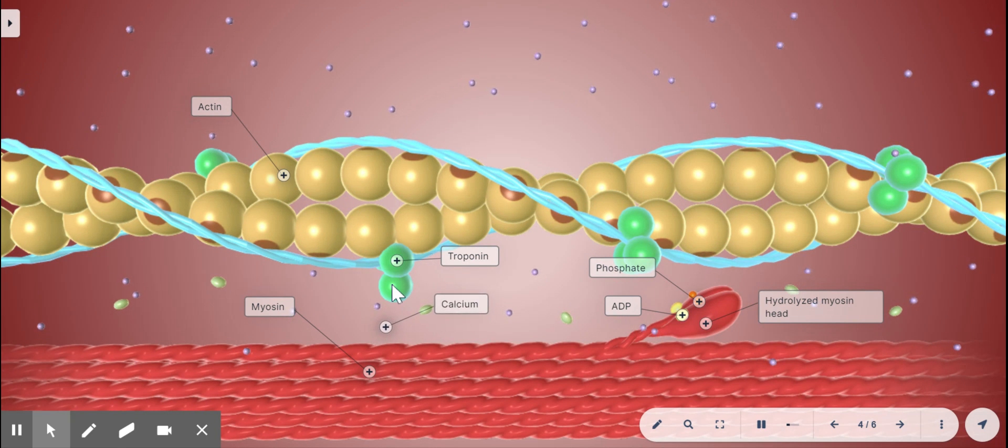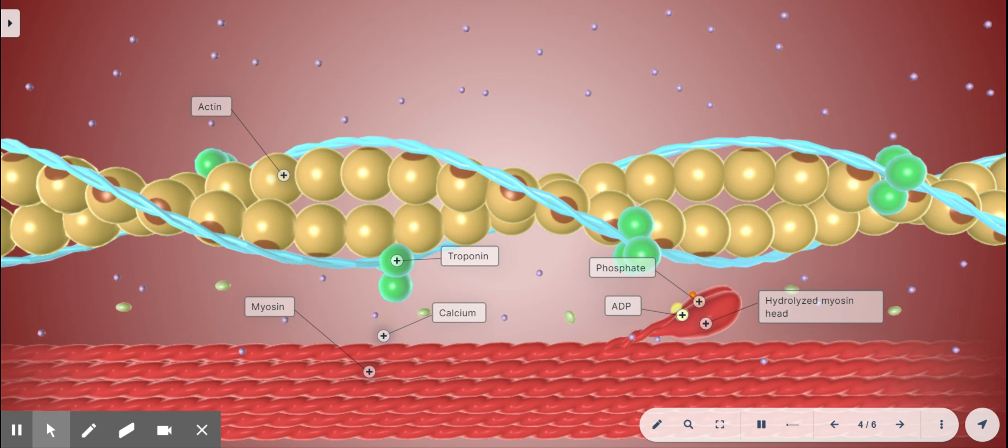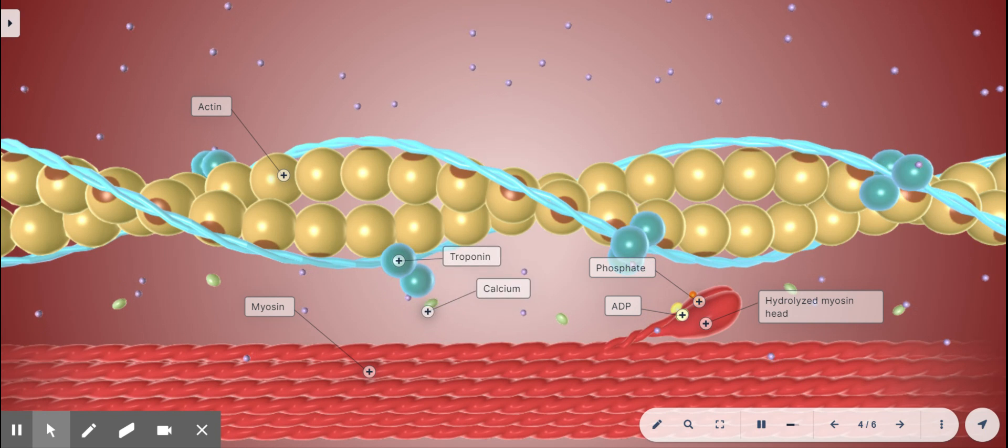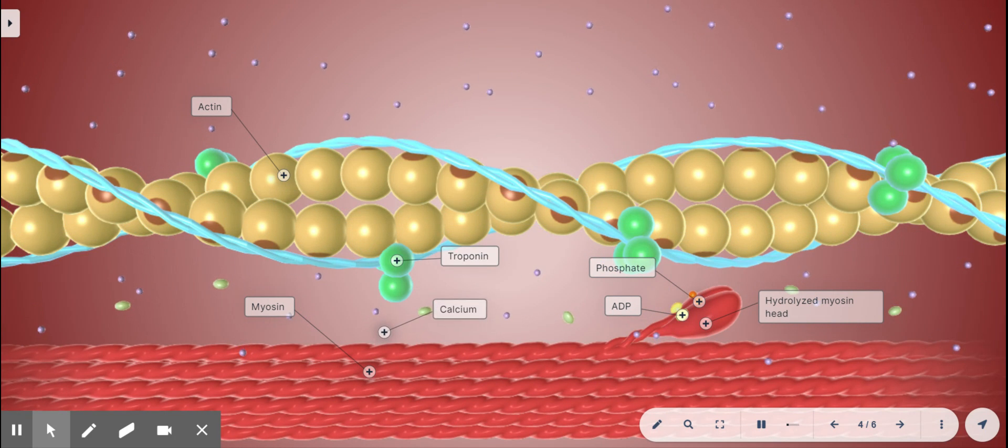When the calcium binds to the troponin, the tropomyosin untwists and exposes these myosin binding sites. And it's these binding sites where the myosin heads down here on the thick filament are about to grab the thin filament.